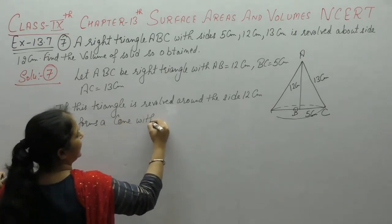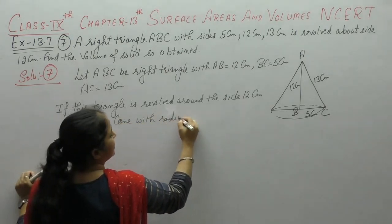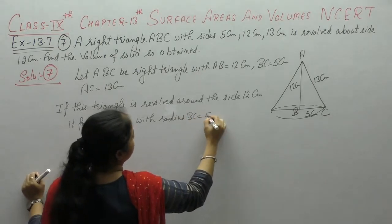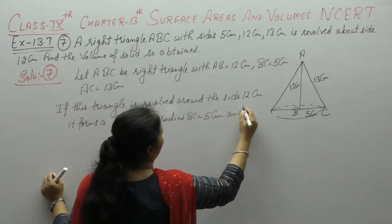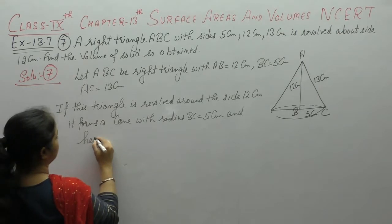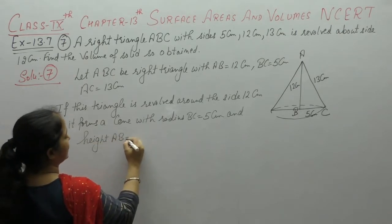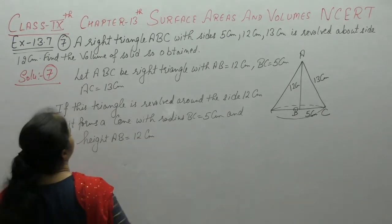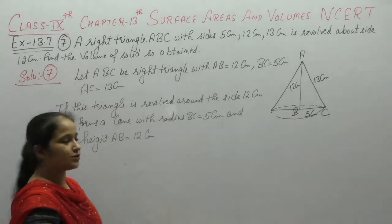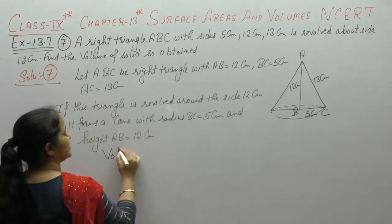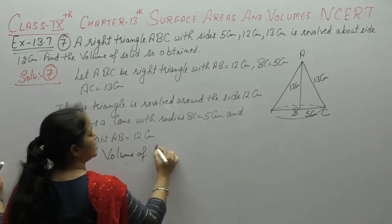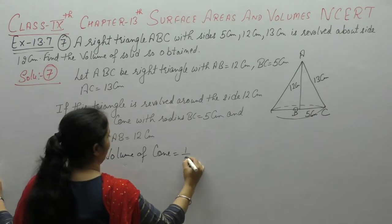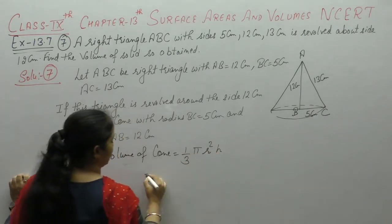With radius BC equals 5 and height AB equals 12 cm. We will find the volume of the solid so update, which solid bana here? Cone, so volume of cone is 1 by 3 pi r square h.